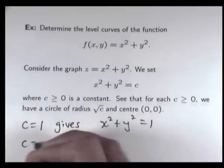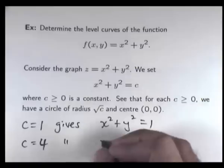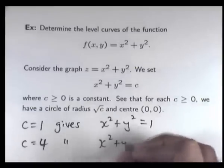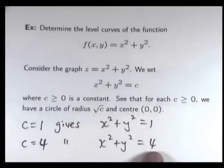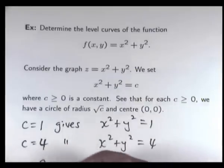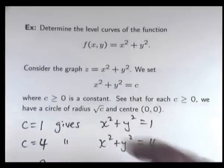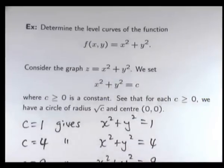Now if I put in C equals 4, I get X squared plus Y squared equals 4 — that is a circle with center at the origin and radius 2. And then C equals 9 gives X squared plus Y squared equals 9, again another circle. So I'm going to draw those circles now.